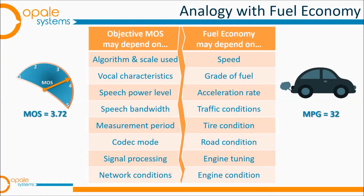Properly conducted subjective tests give quite repeatable scores, but MOS is never an absolute measurement. It has more in common with the concept of automobile fuel economy than with the measurement of physical properties such as voltage, current or frequency.